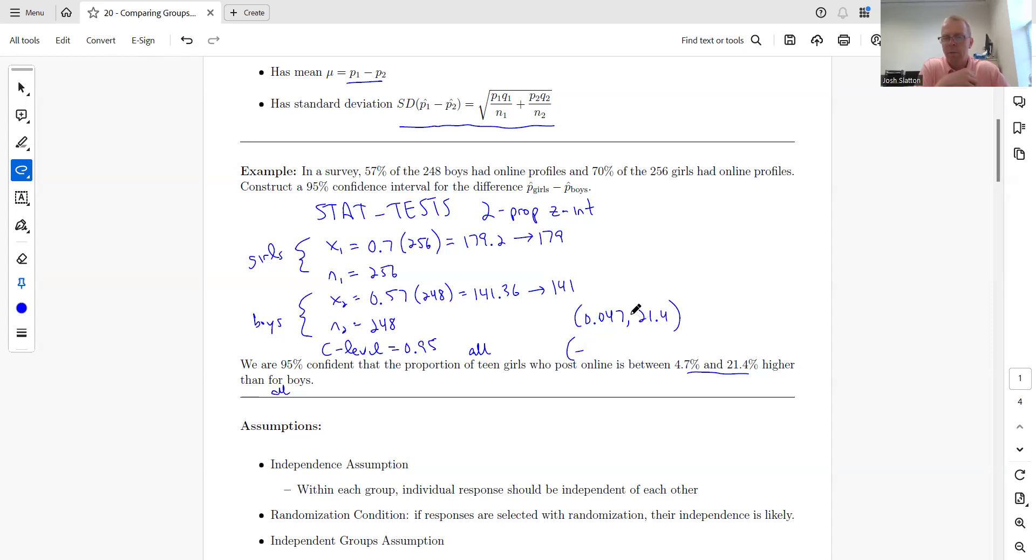If you do it backwards, you get negative 0.214 and negative 0.047. The numbers are switched because the smaller number is always going to be left and then the bigger number will be right. If you get the wrong answer, that's one possibility.